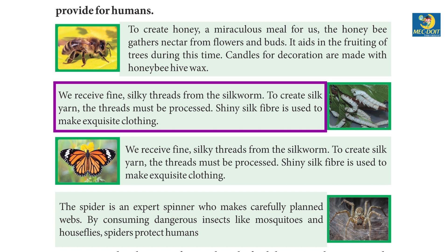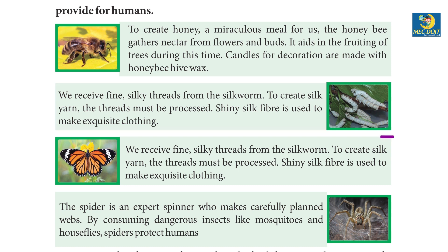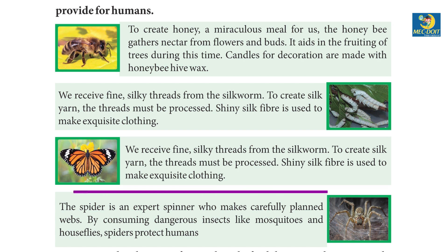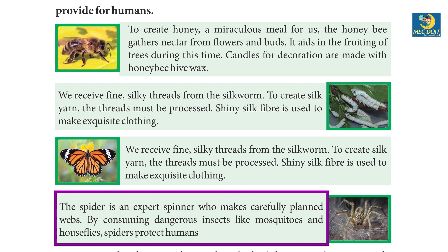Shiny silk fiber is used to make exquisite clothing. Number three covers silk similarly. Number four: the spider is an expert spinner who makes carefully planned webs.